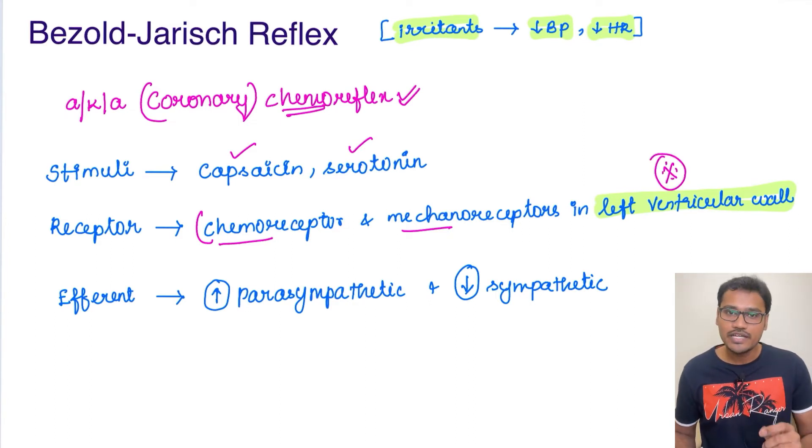So whenever these receptors are activated, what they are going to do is send signals to the central nervous system. And from the central nervous system, they are going to increase the parasympathetic system and decrease the sympathetic system.